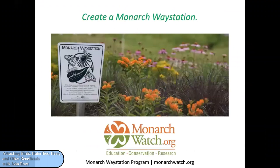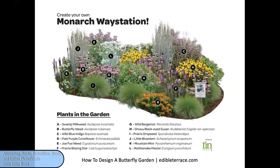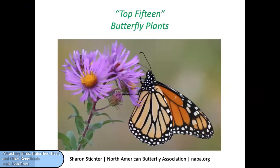You can order a sign from Monarch Watch proclaiming proudly that you are helping them with a Monarch Waystation. Here is an example of a Monarch Waystation offered by edibleterrace.com — there are 12 different species here, two of them are grasses. Notice how the plants are in clumps of several individuals of a given species. In that way, the butterflies can easily move from one flower to the next. It's not difficult for them to find another one of the same species.